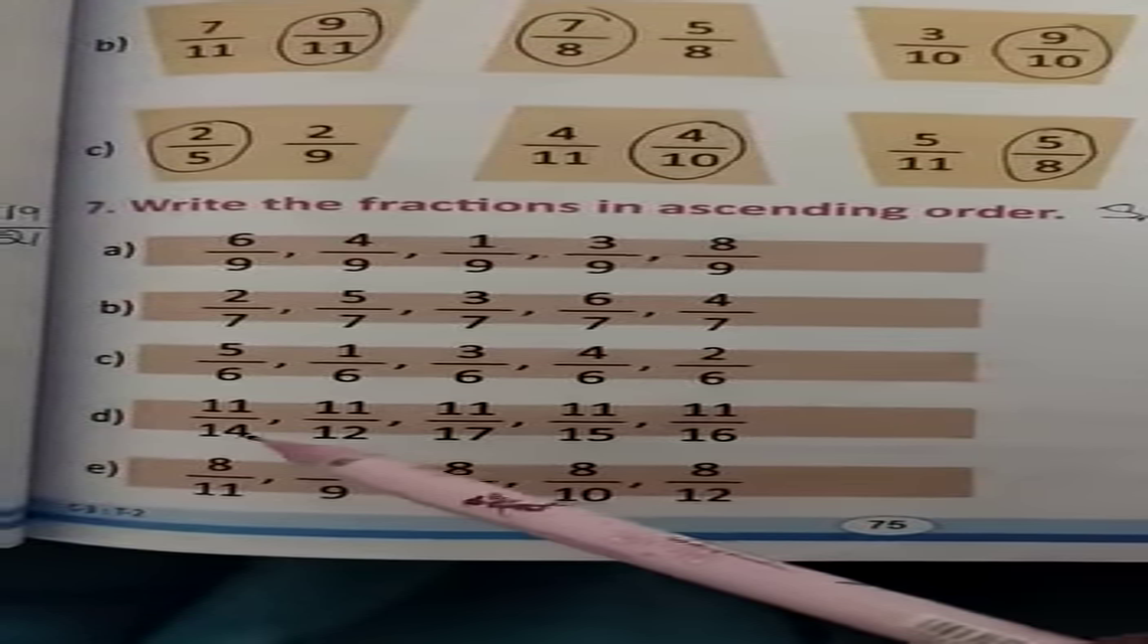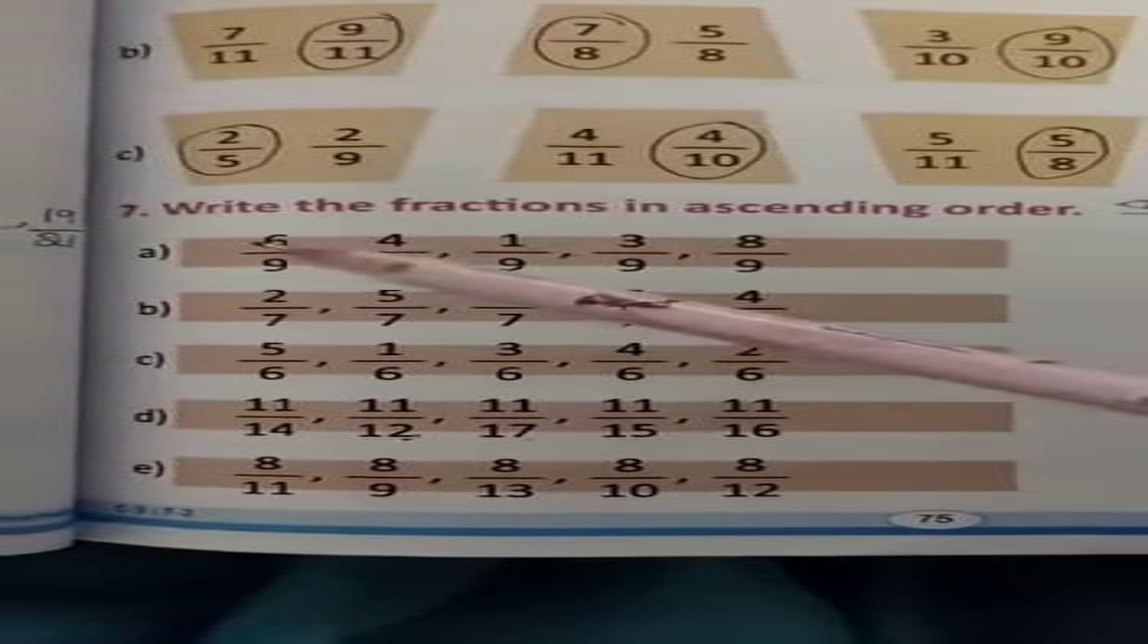When denominators are equal, as usual whichever has the small numerator is the small fraction, and whichever has the big numerator is the big fraction. But when numerators are equal, it reverses. Whichever has the small denominator becomes the big fraction, and whichever has the big denominator becomes the small fraction.